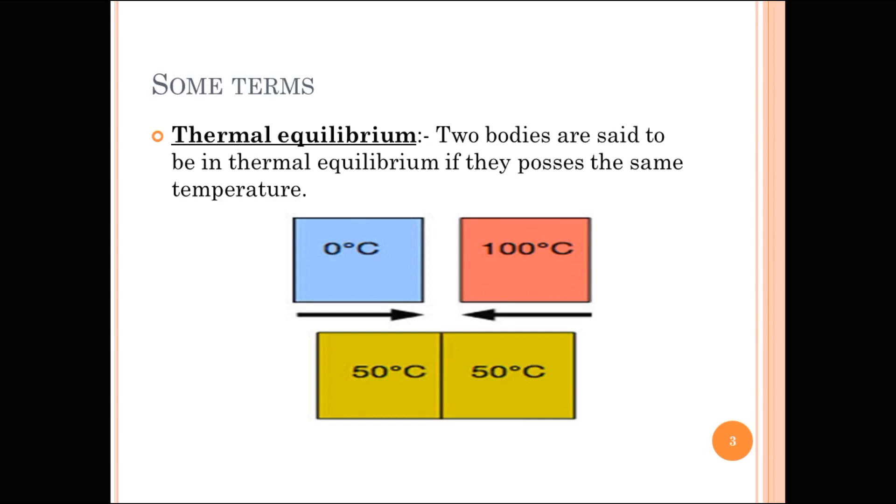Here, one material is at 0 degree Celsius and the other is at 100 degree Celsius. If these two materials are made close to each other, heat transfer will occur and both materials will possess equal temperature, i.e. 50 degree Celsius.